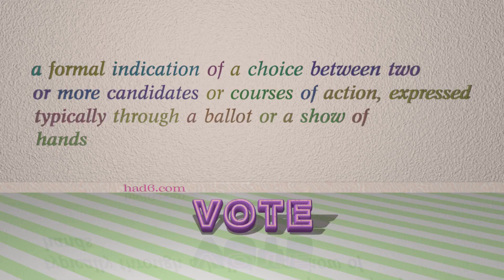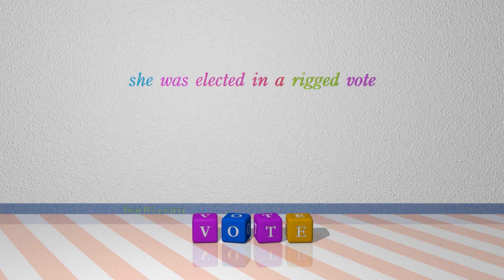Number 3: Vote, which means a formal indication of a choice between two or more candidates or courses of action, expressed typically through a ballot or a show of hands. For example: She was elected in a rigged vote.